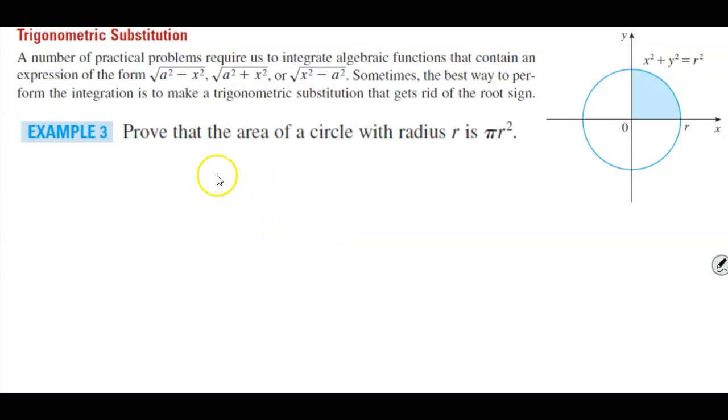In example number three, we want to be able to prove that the area of a circle with radius r is πr².